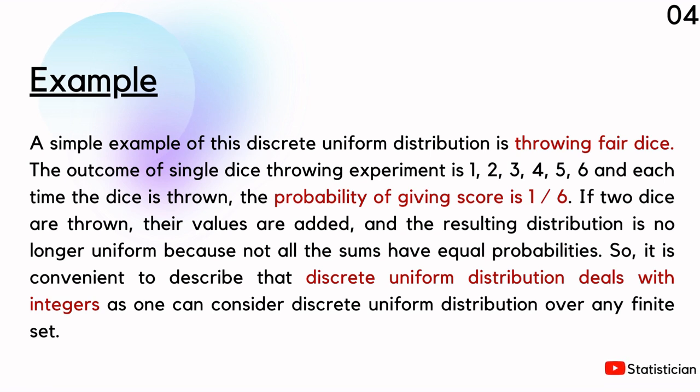When you throw two dice, there will be 36 outcomes and when you add up the numbers, they have different probabilities. The sum of two has a different probability, three has a different probability, and so on. So this is no longer a uniform distribution.